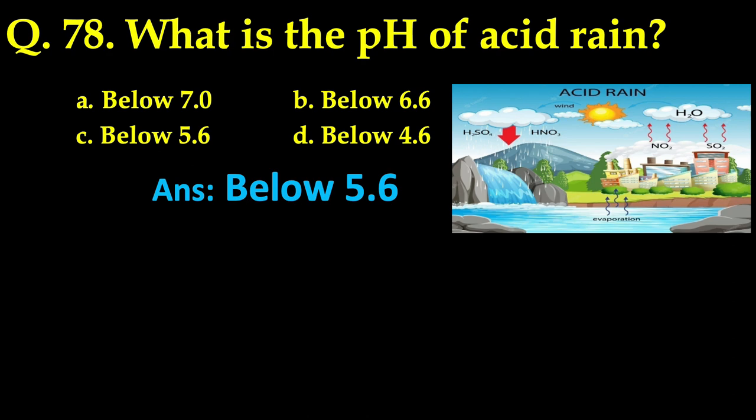Normal rain is already slightly acidic, and only when the pH of rain or snow is below 5.6 is it considered acid rain. For further details, please see the book written by G.L. Agrios in 2005. Acid rain occurs due to the presence of oxides of sulfur and nitrogen in the atmosphere, which react with water vapor to form acids.